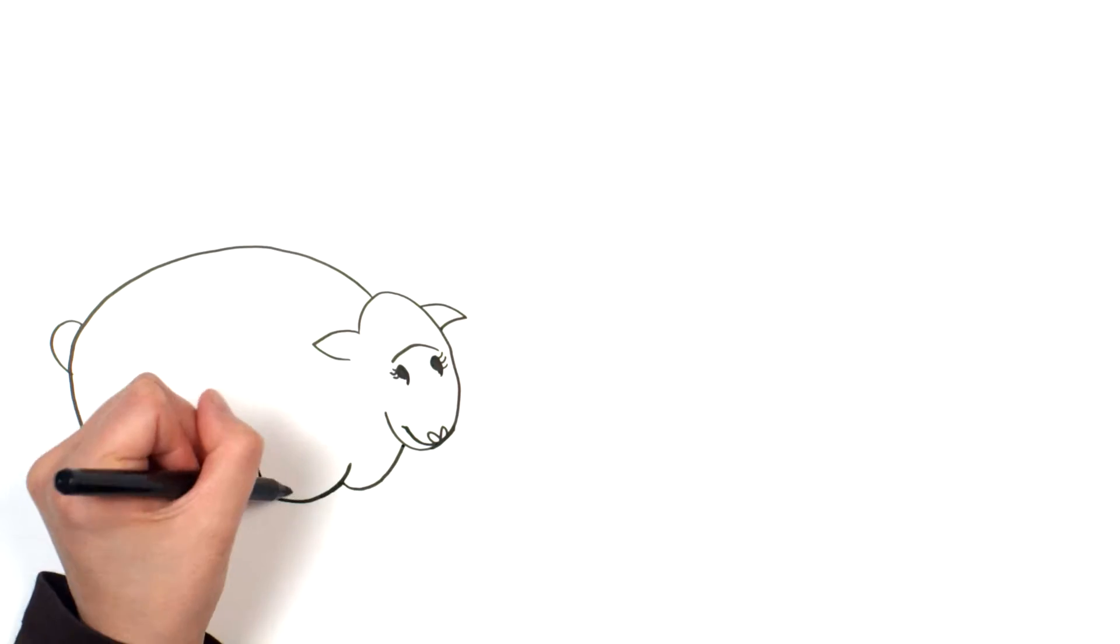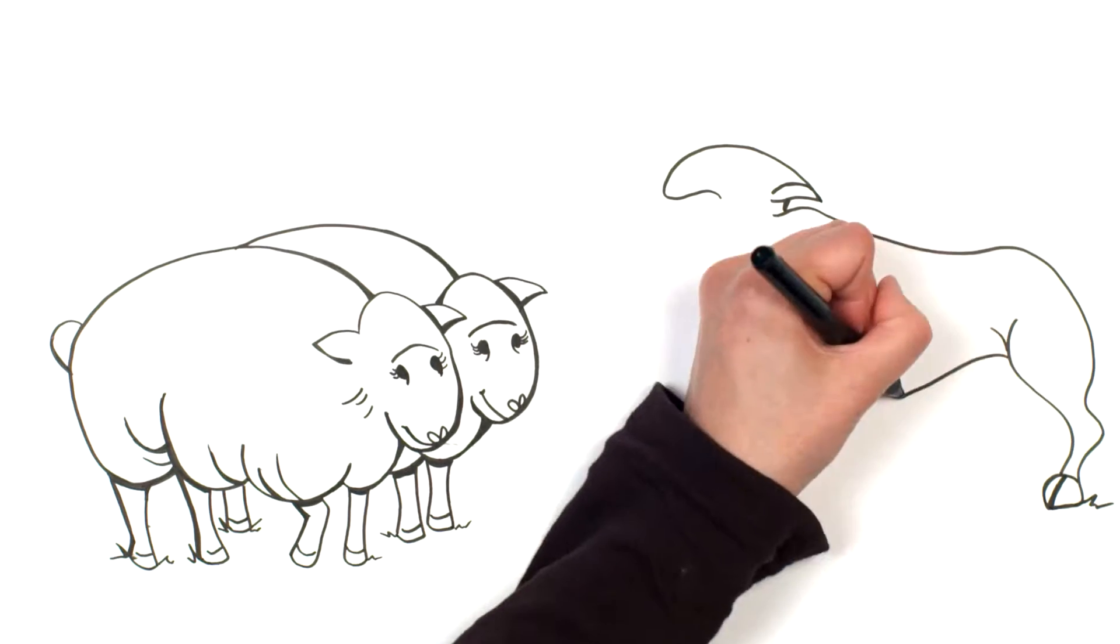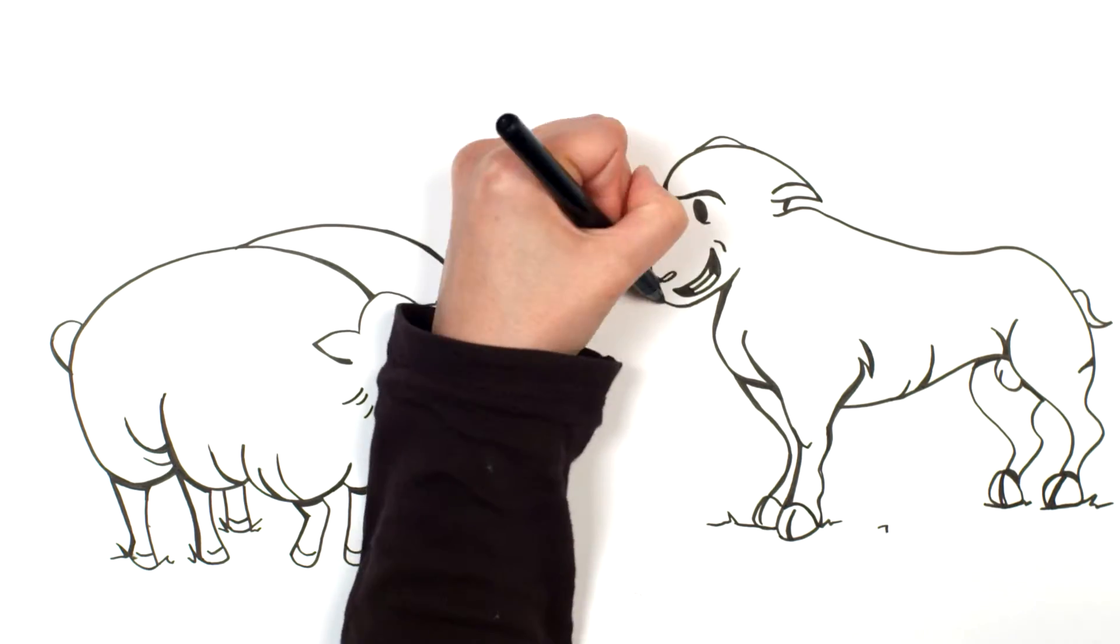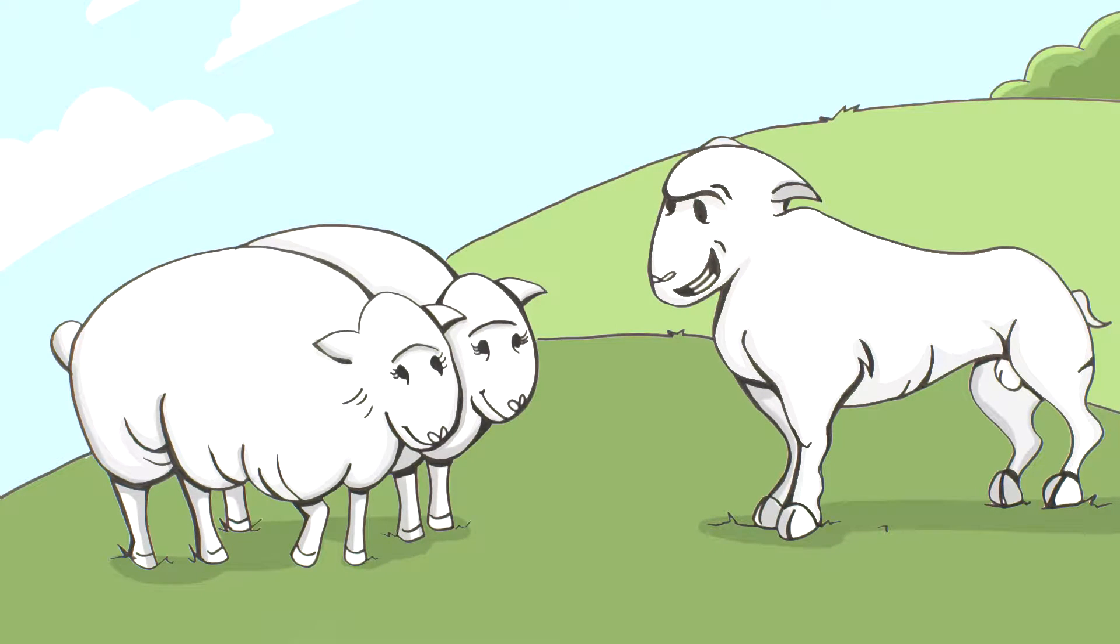When I think back to how my flock could have come in contact with MAP, I think of some replacement ewe lambs and a young ram I bought at a sale years ago. They looked healthy. I didn't think about asking about the farm they were from or what diseases they might have.